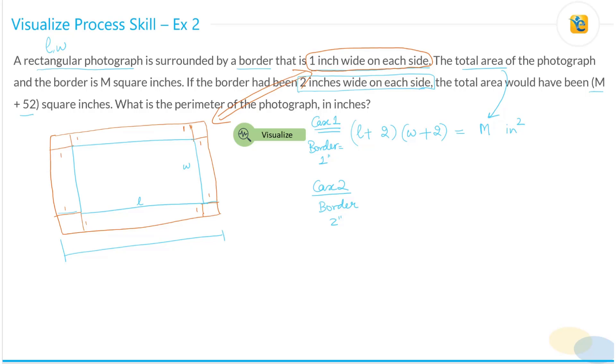So then what does it say? The total area would have been M plus 52 square inches. What is the perimeter of the photograph? Very important. We are not talking about the perimeter of the entire photograph plus the border. We are just talking about the perimeter of the photograph, which means what we need is twice into L plus W. This is what we need. So very important to understand what is the question statement asking.